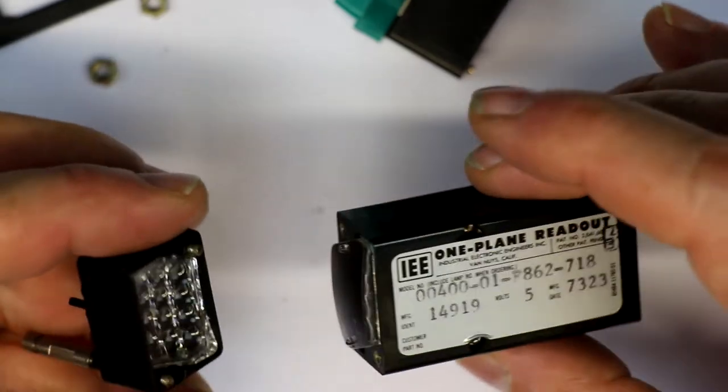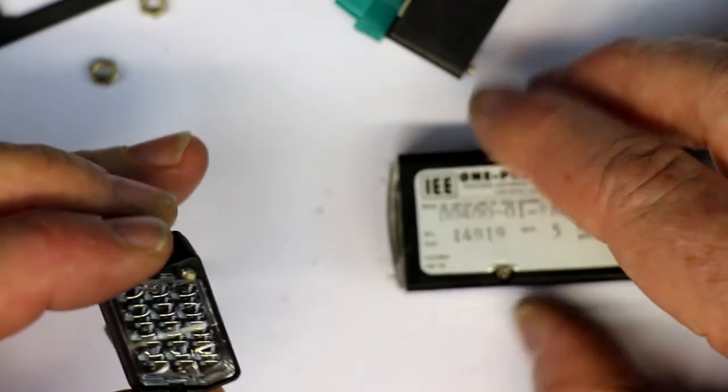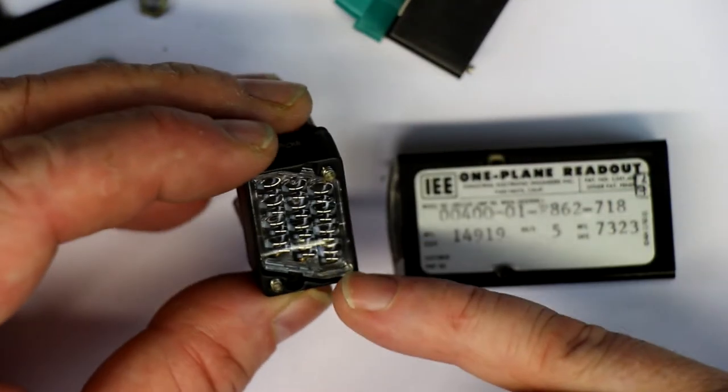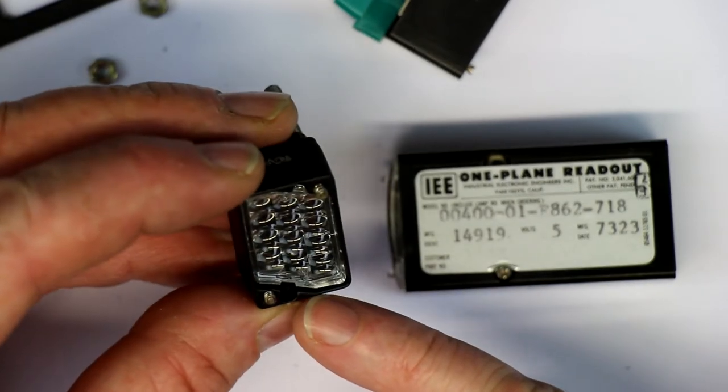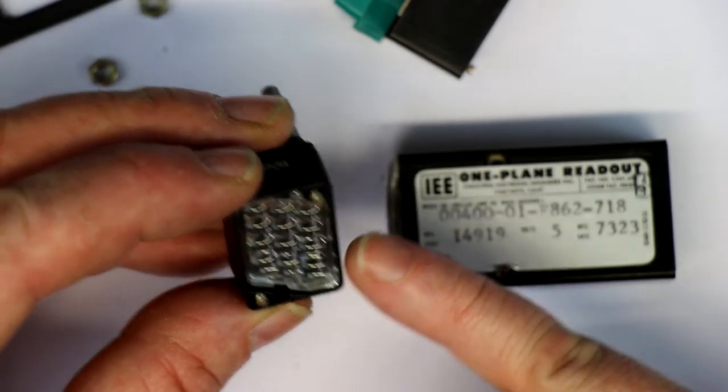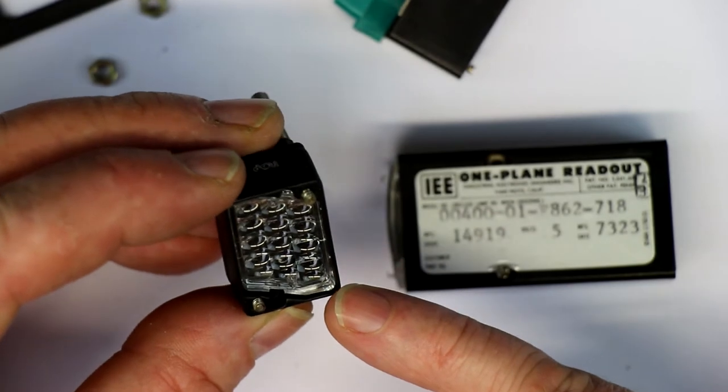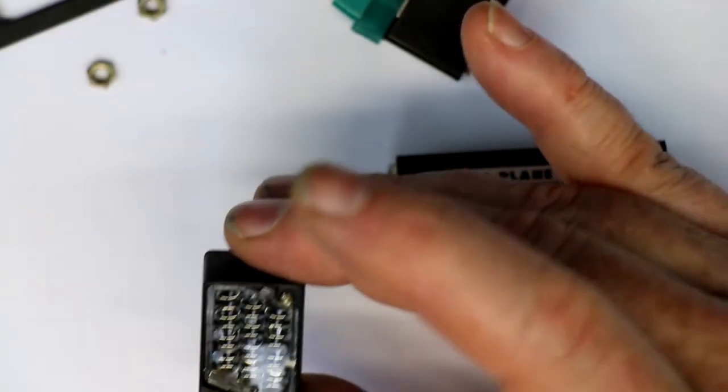Okay, here the next thing comes apart. Here we apparently have the lens array, 12 projection lenses for the maximum of 12 little bulbs. So let's see if we can get the lens out just to replace the bulbs.